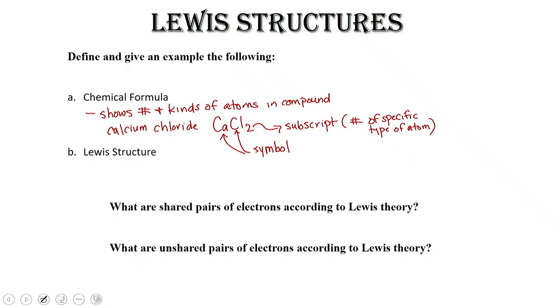We have another example where we have something like methane, which is CH4, where we notice that the C and the H represent our symbols, and the 4 says that we have four hydrogen atoms in our compound. Calcium chloride is an ionic compound, and methane is a covalent compound.